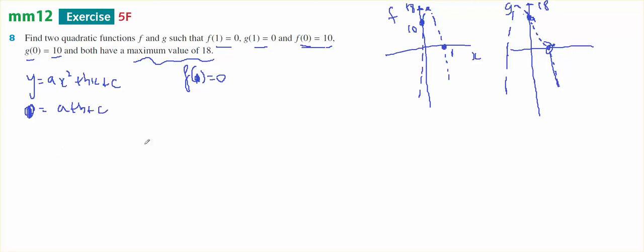And f of 0 equals 10, so 10 equals c. Therefore, 0 equals a plus b plus 10. So a plus b equals negative 10. That's equation number 1.